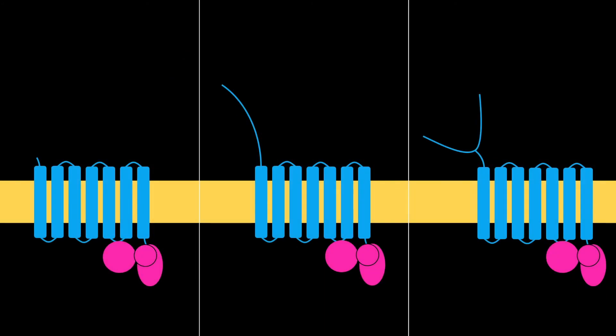GPCRs are subdivided into class A, B, and C. Class A receptors have a ligand binding pocket and include rhodopsin and protease activated receptors.